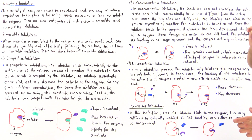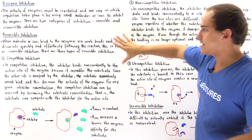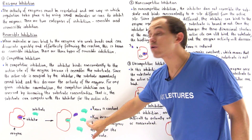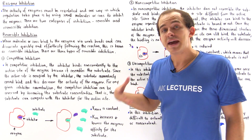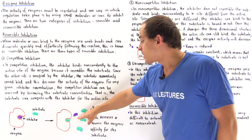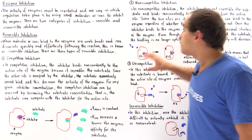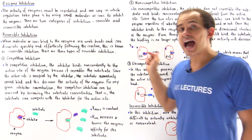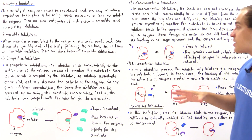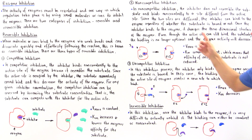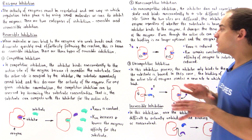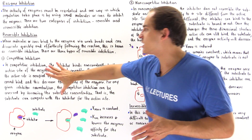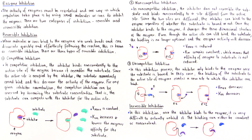One last thing to mention: in competitive inhibition, by increasing the concentration of substrate, we can kick the inhibitor out of the active site. But for non-competitive and uncompetitive inhibition, because the inhibitor does not actually bind to the active site, no matter how much we increase the substrate concentration, that will not displace our inhibitor. That's the major difference between competitive inhibition and these two types.